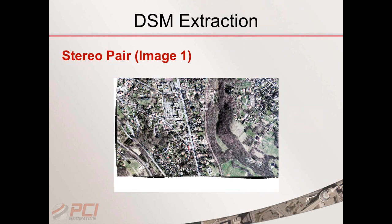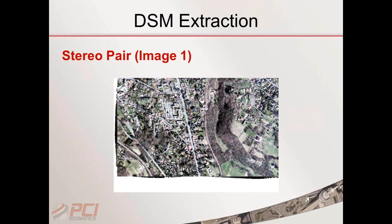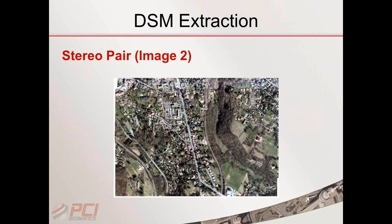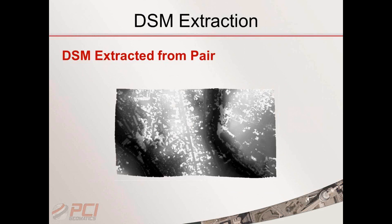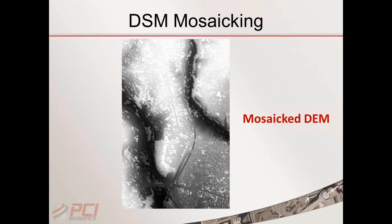OrthoEngine looks at all the different stereo pairs and automatically identifies which images are associated with which others, finding the left and right looking stereo pairs and creating the epipolar image. From that it extracts the digital surface model for each pair individually. Finally, it takes all the different stereo pair DSMs and mosaics them together into one single mosaic DEM. All of this happens under the hood — OrthoEngine organizes everything for you.